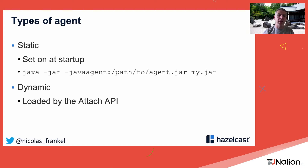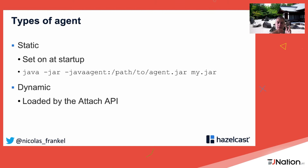Not as many people know there's a dynamic way to attach an agent. You have a JVM running in normal mode — not debug mode — and through the Attach API you can inject an agent into that running JVM dynamically.